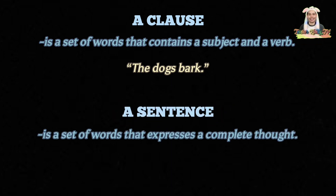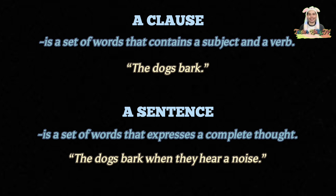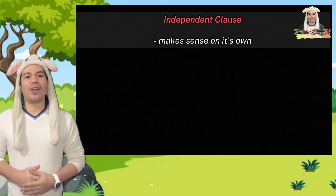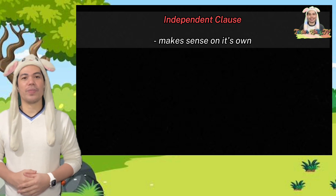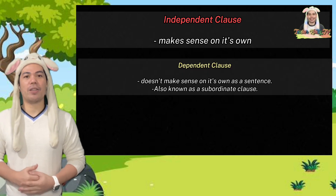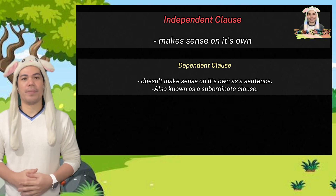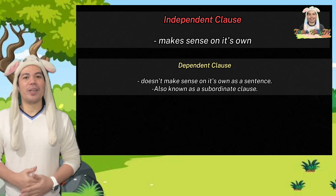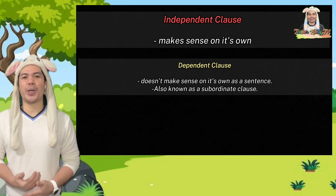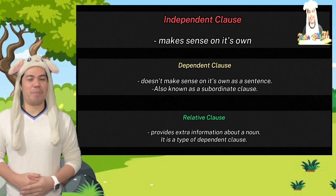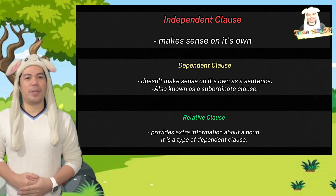While a sentence is a set of words that expresses the complete thought, like "the dogs bark when they hear a noise." A dependent clause, also known as a subordinate clause, is a clause that doesn't make sense on its own as a sentence. These clauses depend on independent clauses to clearly express ideas. A relative clause provides extra information about a noun and is a type of dependent clause.